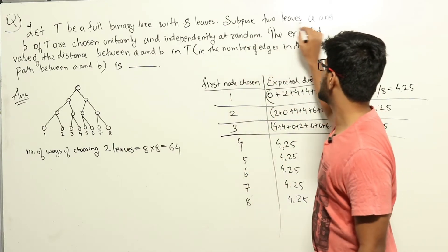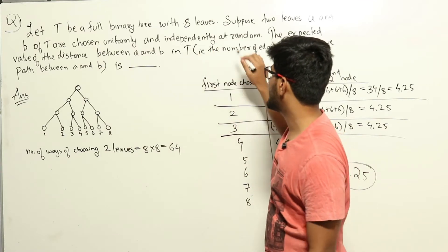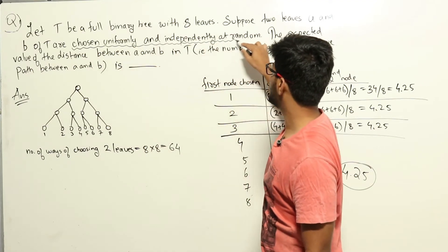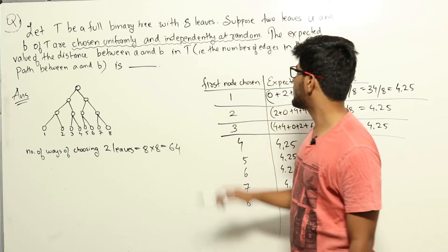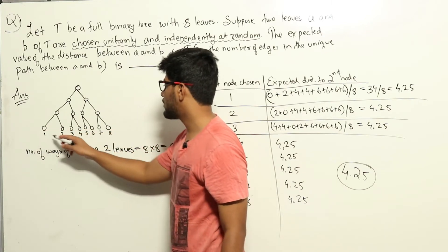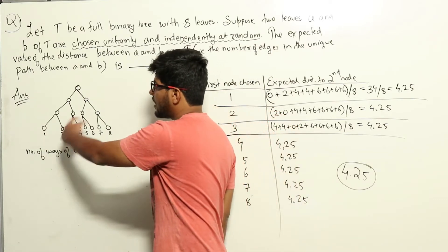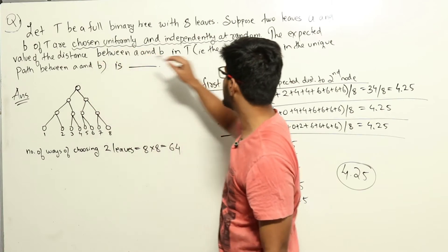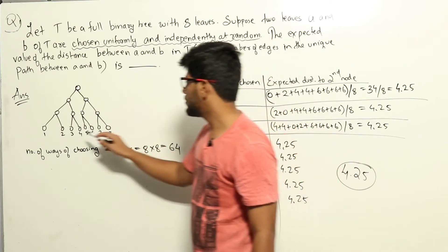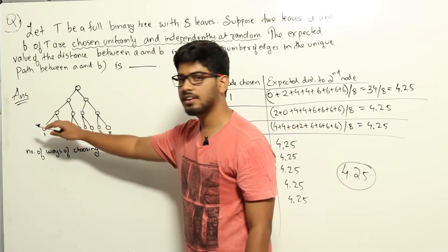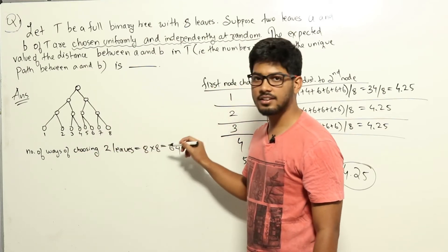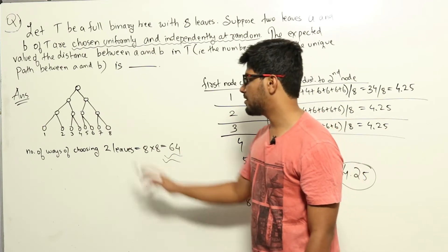They say suppose two leaves A and B of T are chosen uniformly and independently at random — give specific note to this. Two leaves chosen independently at random means if we number the leaves 1 through 8, in the first try if I choose leaf 1, in the second try I can also choose leaf 1. That doesn't mean A and B are different leaves — A and B could be the same. So the total number of ways of choosing two leaves is 8 × 8 = 64, and the two leaves could be the same.